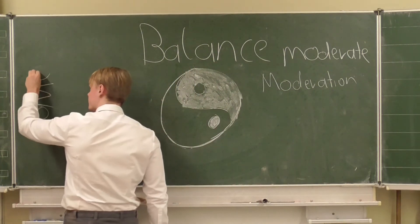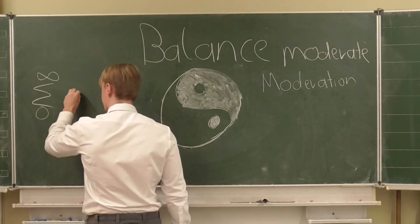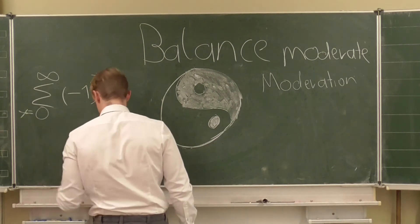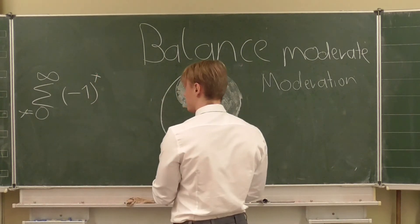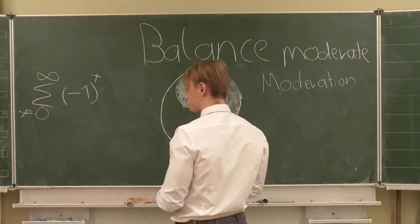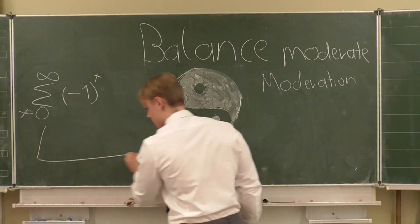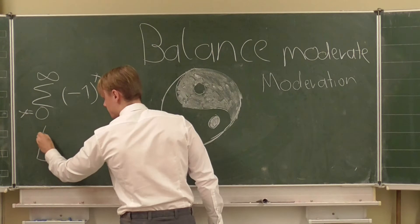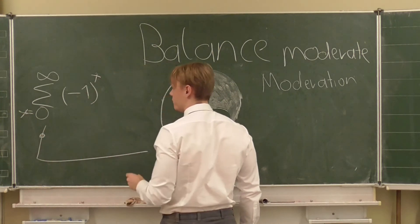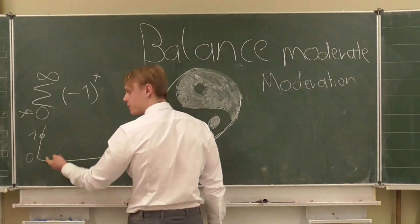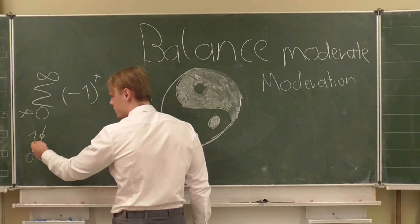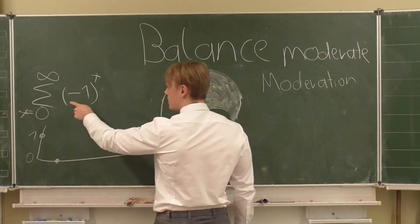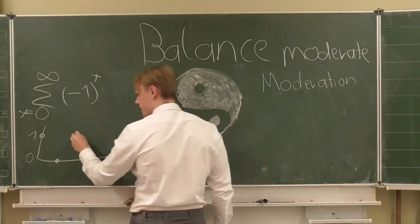We are going from zero to infinity and we are summing minus one to the power of x. What does that look like? Minus one to the power of zero is one. Minus one to the power of one is minus one. So we subtract one from the one we are at. Now we are at zero and then minus one to the power of two is one again.